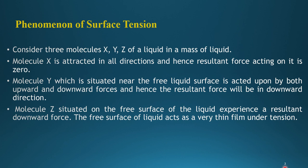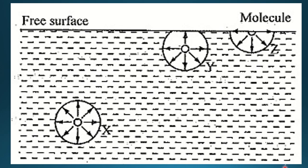I will now explain the phenomenon of surface tension according to fluid mechanics, useful for competitive exams. Consider a complete mass of water open to the atmosphere. We consider three molecules: molecule X, which is completely submerged inside; molecule Y, with three-fourths inside and one-fourth open to atmosphere; and molecule Z, which is exactly half inside the liquid and half open to atmosphere. Molecule X is equally attracted in all directions by surrounding water molecules.